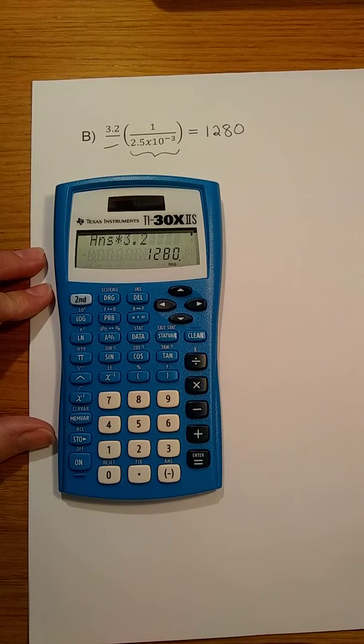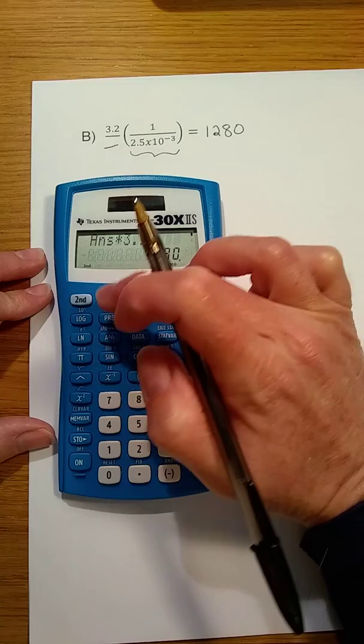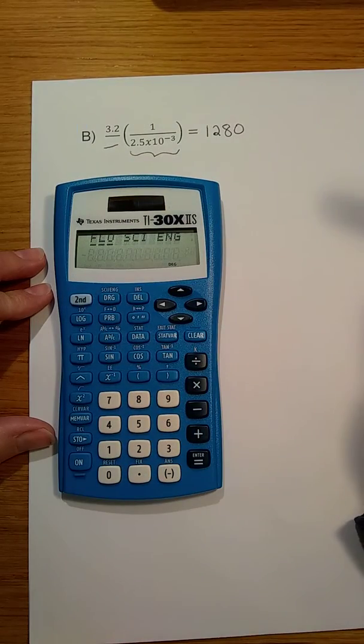If we want to see this value in scientific notation, we can go to the scientific notation mode. We do this on this calculator by pressing second function, the psi engineering key.